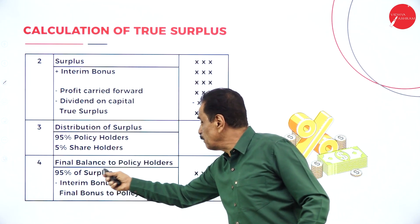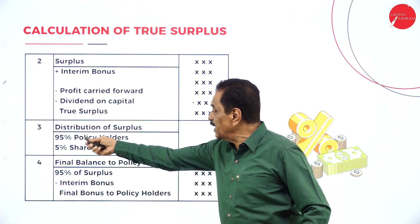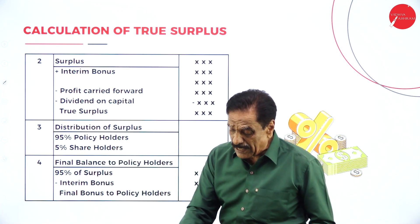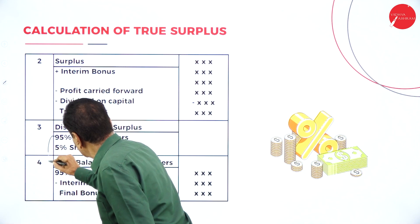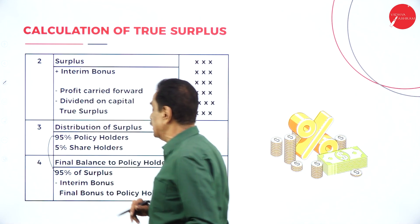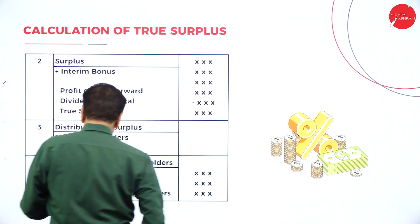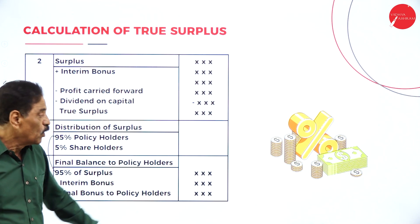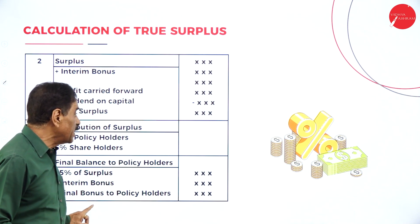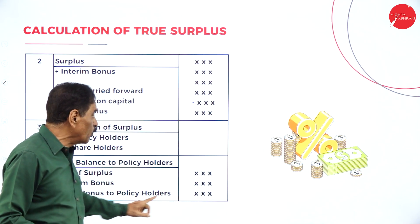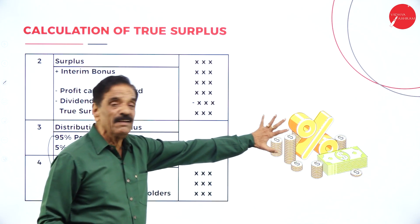The last step is the final balance to the policyholder. You have already calculated 95%. Out of this 95%, you already paid the interim bonus — that should be deducted. Whatever the difference comes, that is the final bonus that goes to the policyholder.